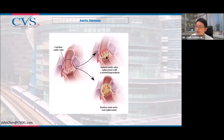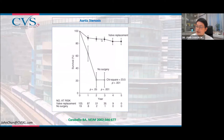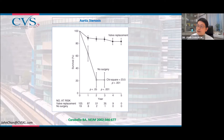At surgery, we excise the thickened valve, decalcify the aortic annulus, and suture a new valve into place to replace the diseased aortic valve. Unlike mitral disease where you can live quite a long time without surgery, in aortic stenosis with symptoms, survival drops very fast without surgery. This is one condition where you really should not wait too long once diagnosed with severe aortic stenosis.